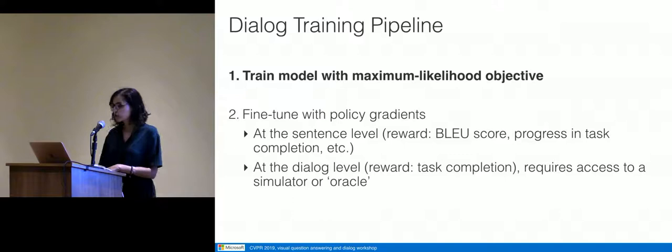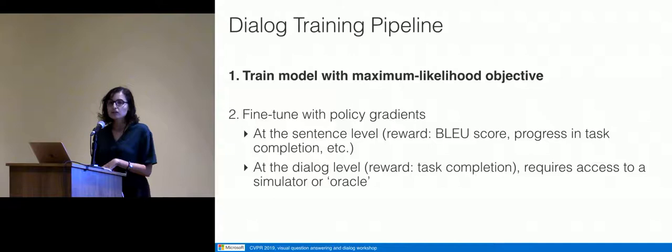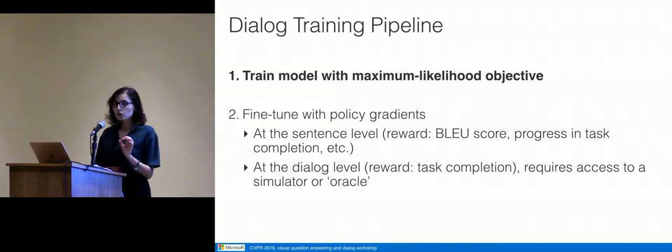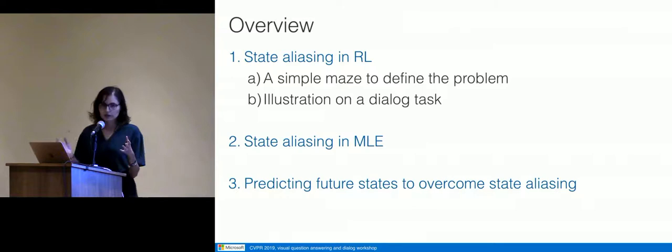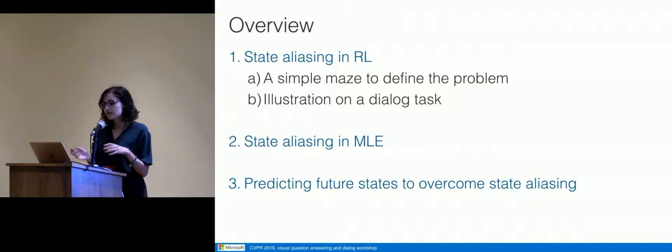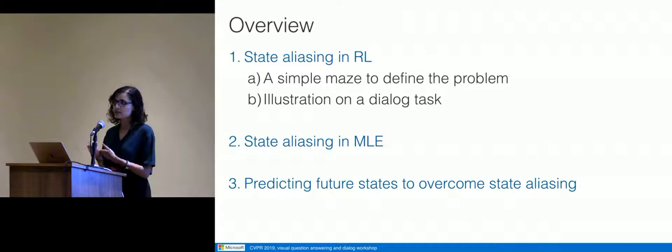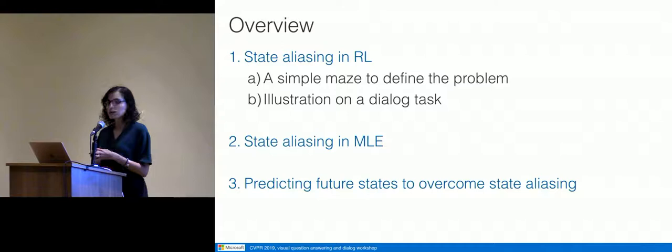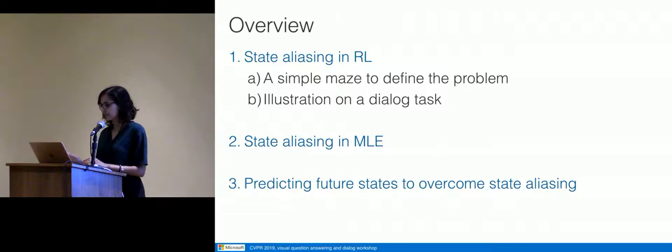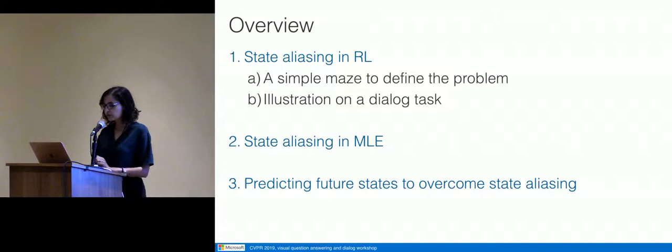The work I'm going to present was really meant to avoid fine-tuning with reinforcement learning and avoid having to build a user simulator. We focused on one phenomenon in particular: state aliasing. State aliasing is easier to characterize in the RL setting, so I'll start there to explain the phenomenon clearly — starting with a very simple RL example, then going to the dialogue case, and then the maximum likelihood case. At the end, I'll hint at a solution we've proposed recently.